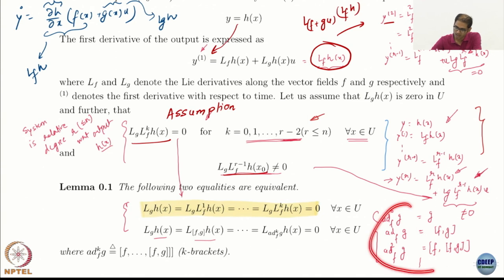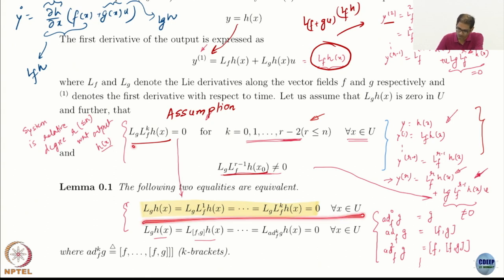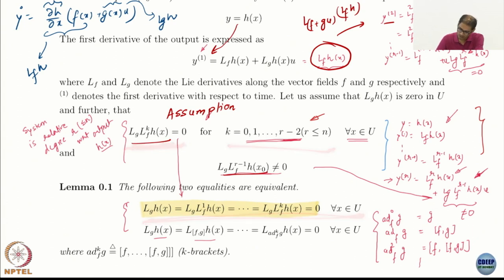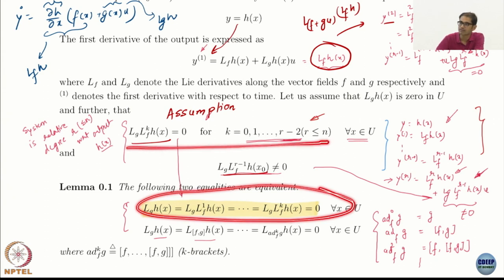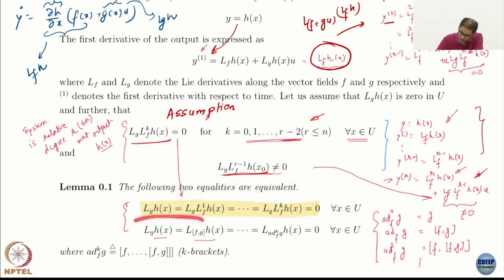We will use this in the proof of when we can do feedback linearization. We need this result which says that if these quantities — Lg h, Lg Lf h, up to Lg Lf^(r−2) h — are all 0, that is equivalent to the ad bracket versions being 0. The first condition holds by the relative degree assumption, and if the first holds then so does the second.